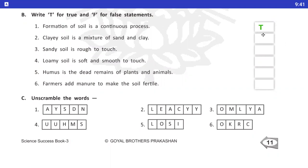Loamy soil joe hooti hai woh sand or clay ka mixture hooti hai. Number 3, Sandy soil is rough to touch. True. Sandy soil joe hooti hai woh touch karne mein rough hooti hai. Number 4, Loamy soil is soft and smooth to touch. Number 5, Humus is the dead remains of plants and animals. Yes, humus joe hooti hai woh dead plants and animals ka remain hooti hai. Number 6, Farmers add manure to make the soil fertile. Farmers soil ko fertile karne ke liye us mein manure mix kerti hai. True.